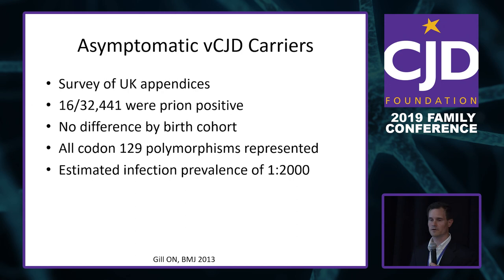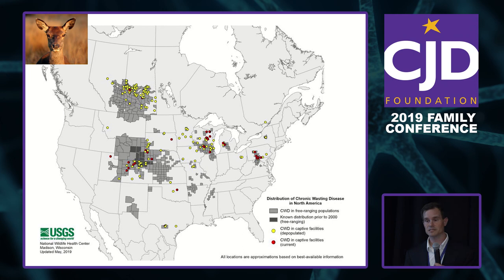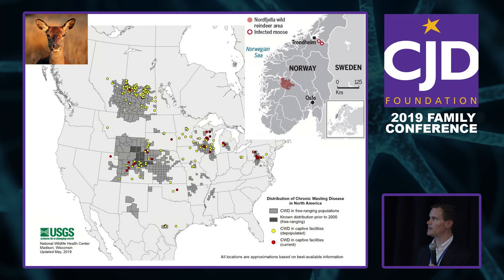Chronic wasting disease is a very concerning prion disease of deer, elk, moose, and caribou found in most U.S. states. It's excreted in saliva, urine, and feces of free-ranging animals. We're concerned that humans could potentially be exposed and develop illness — we don't have evidence for that yet, but that doesn't mean it's not happening, so continued surveillance is essential.